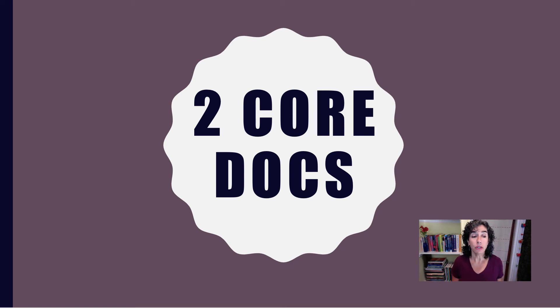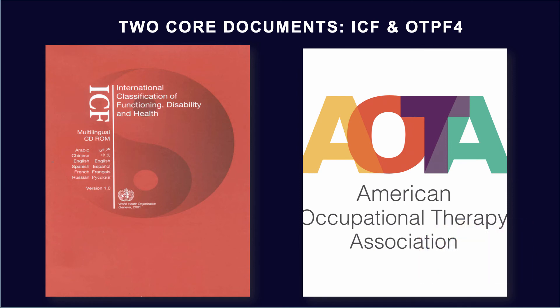Now let's get to our core documents. We have two, and we're going to talk about them separately. First, we're going to talk about the ICF, which is put out by the World Health Organization. It's not an American or North American document — it's an international document. It stands for the International Classification of Functioning, Disability, and Health. It's a document that we reference when we want to describe how our clients are doing in terms of their functioning, their health, and states of disability.